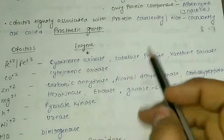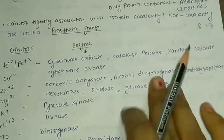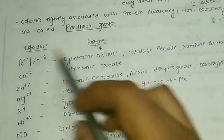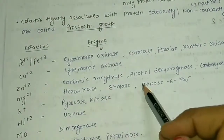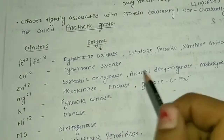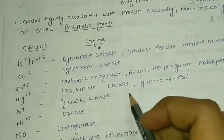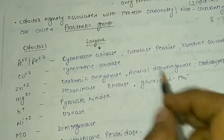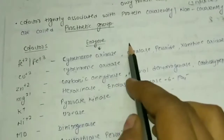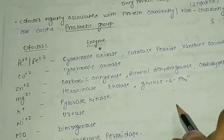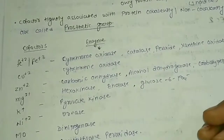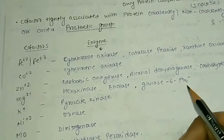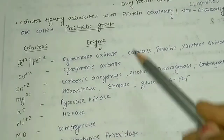Next, let's talk about cofactors involved in specific enzymes. These cofactors play an important role and most exam questions are asked from this part. In life science exams, many questions ask which metal ion is present in cytochrome oxidase, or which cofactors are present in hexokinase and pyruvate kinase.